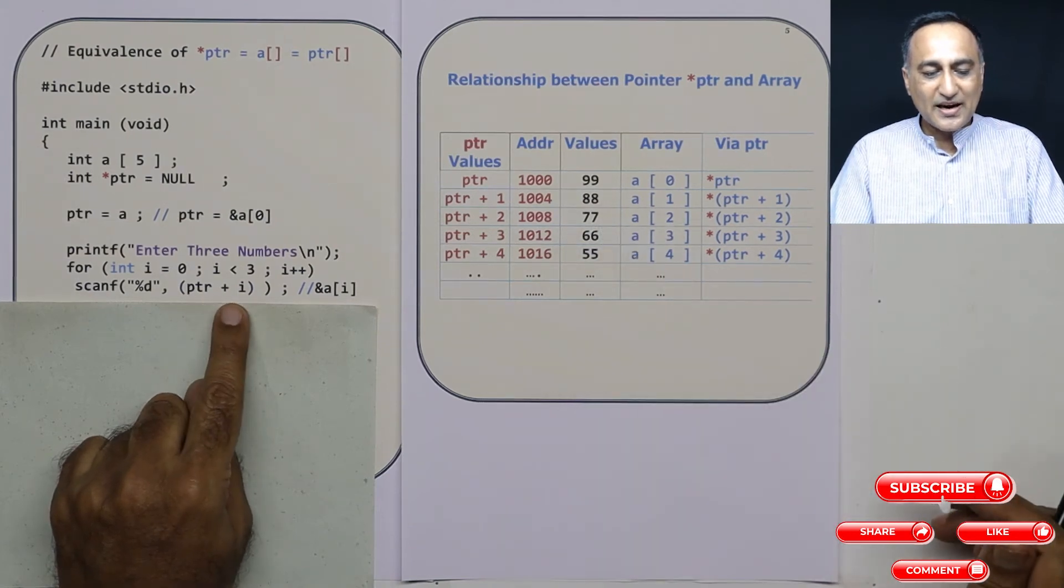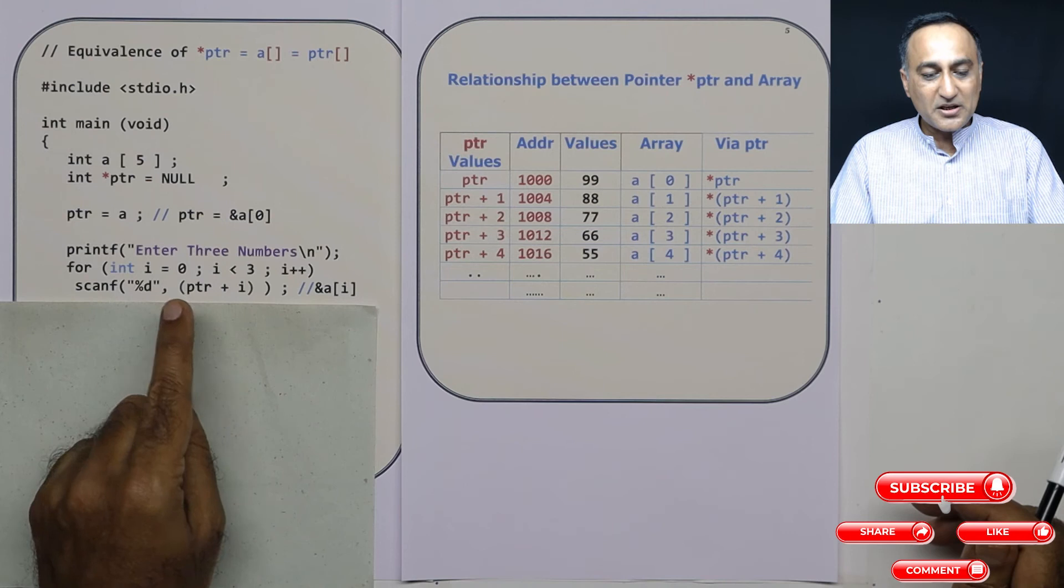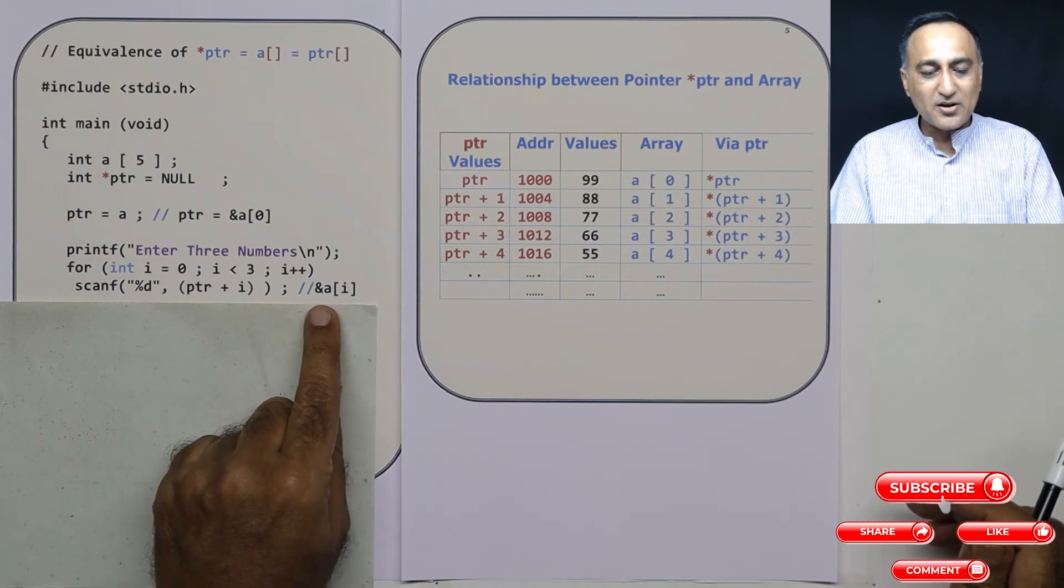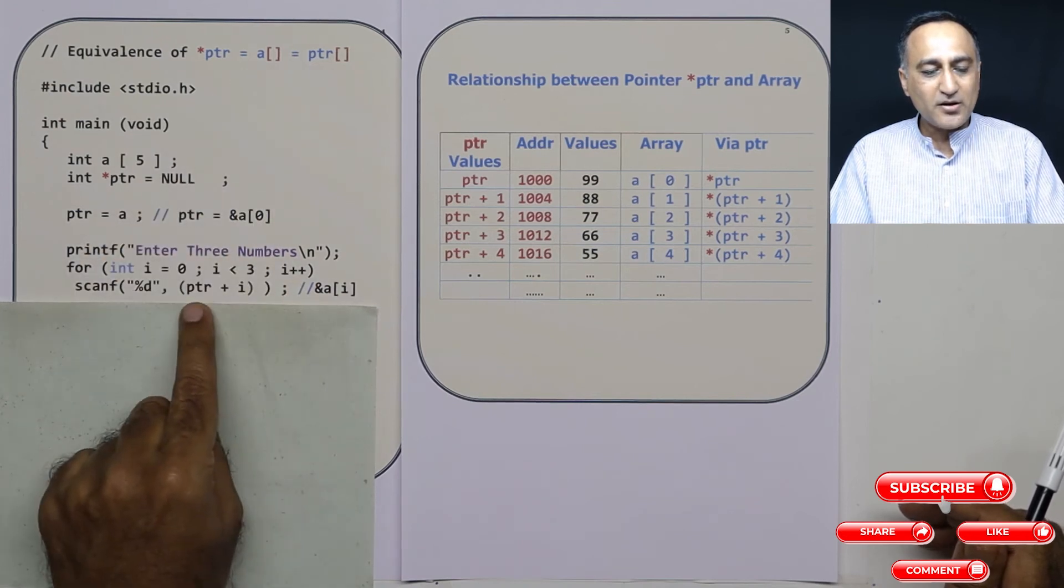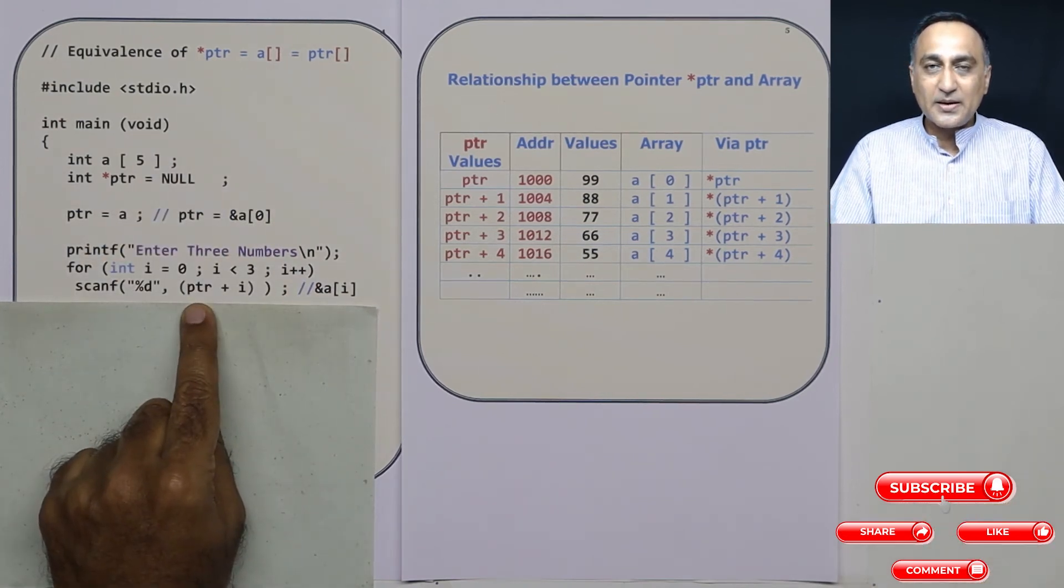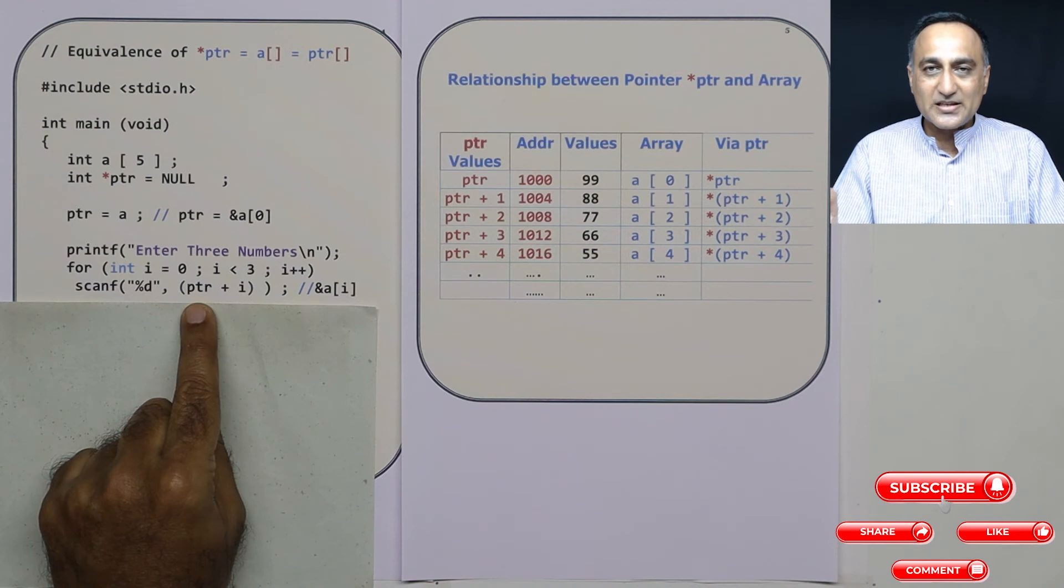So this ptr plus i or *ptr now you can say is very similar to a[i] because it is exactly able to do what you can do with a[i] using this ptr type of pointer or address type of a variable.